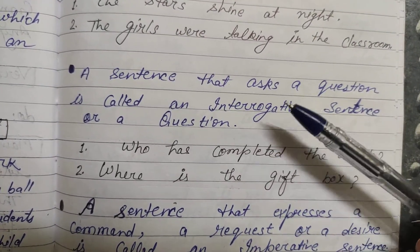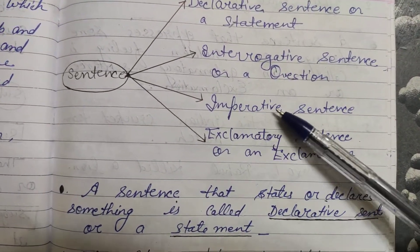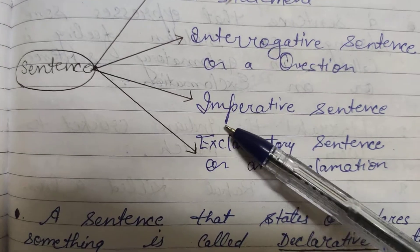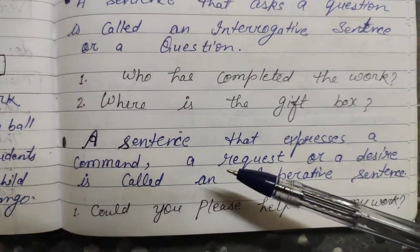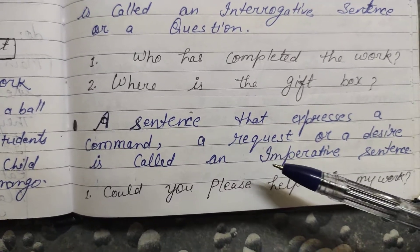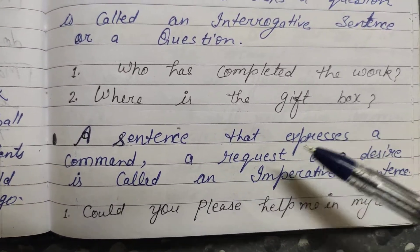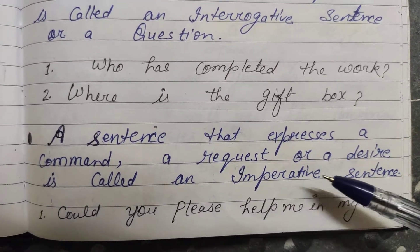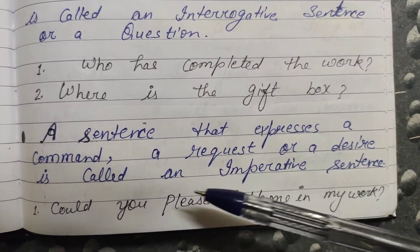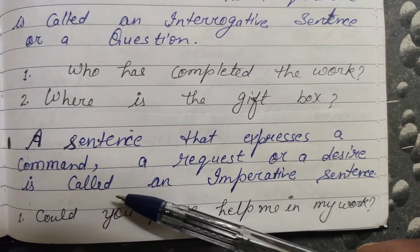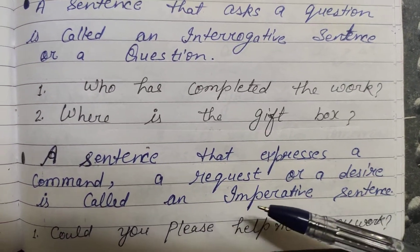Now we come to the third one — the imperative sentence. A sentence that expresses a command, a request, or a desire is called an imperative sentence. Ek aisa sentence jo command, order, request, ya desire yaani ki wish ko express karta hai, jisko hum imperative sentence kehte hain.